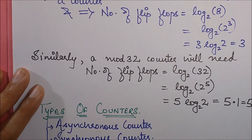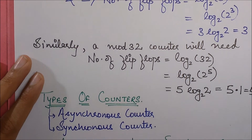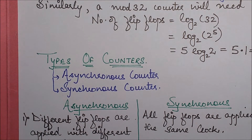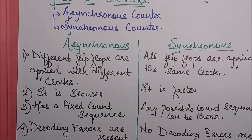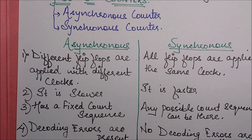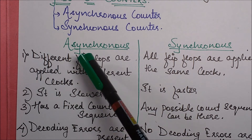Now let's move on to the types of counters. There are basically two types: asynchronous and synchronous counters. In an asynchronous counter, different flip-flops are applied with different clocks — they are not aligned or driven by a single clock. In a synchronous counter, all flip-flops are connected to the same clock. Because of this, synchronous is faster while asynchronous is slower.